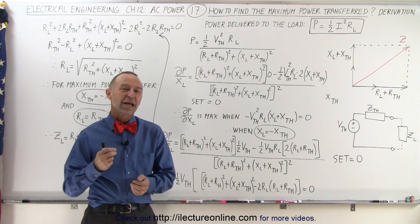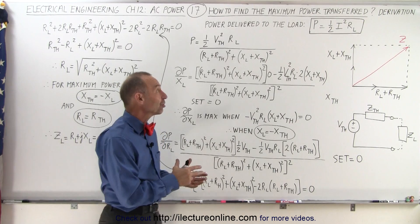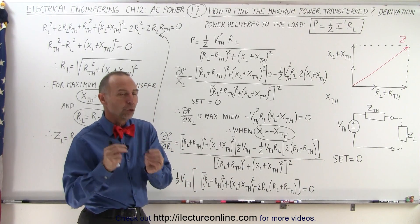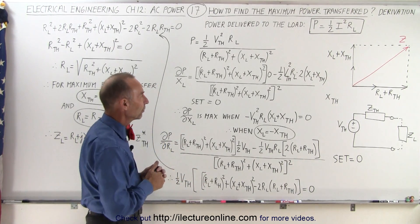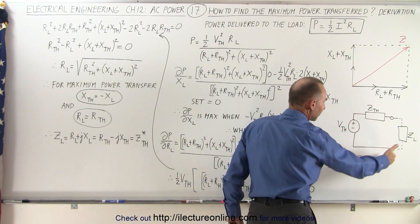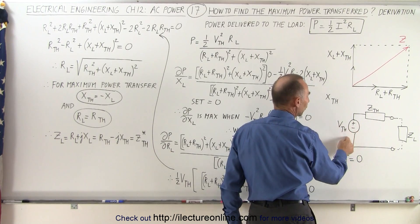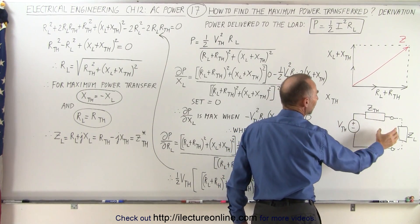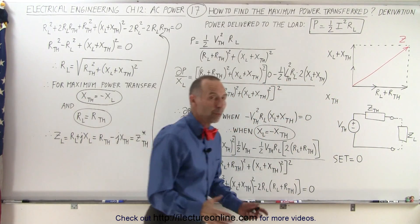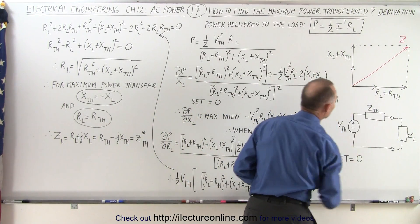Welcome to ElectronLine. We're going to do a more formal derivation of how to calculate the maximum power delivered to the load impedance. We have a circuit which we'll convert to a Thevenin equivalent circuit, giving us the Thevenin voltage and the Thevenin impedance, and attached to that we have the load impedance. We want to maximize the power transferred to the load impedance.